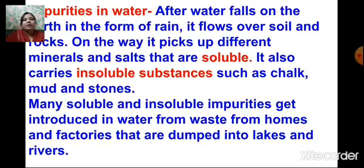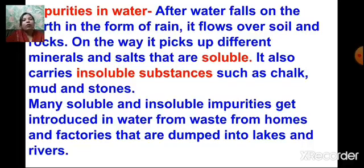Now, impurities in water — these are unwanted things. We get water in the form of rain. The rain comes to the earth and gets collected in various water bodies like seas, rivers, oceans, lakes, etc. When the water comes to the earth, while moving across the surface, many impurities — unwanted things — get mixed up with the water.